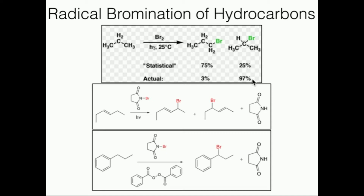We'll look at specific examples after we cover the theory. You can also do radical chlorination, but chlorination is not as useful because it's really not as specific — you usually end up with a mixture of products. Bromination, although you get about 3% primary, is much more specific and therefore much more useful in synthesis. Whenever we want to radically halogenate an alkane, we never use chlorine. It's typically introduced that way in textbooks, but you'll use bromine for the rest of the time.